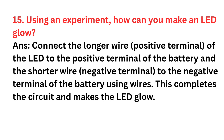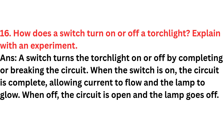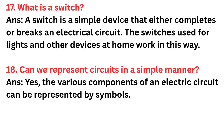Question fifteen: Using an experiment, how can you make an LED glow? Answer: Connect the longer wire (positive terminal) of the LED to the positive terminal of the battery and the shorter wire to the negative terminal using wires. This completes the circuit and makes the LED glow. Question sixteen: How does a switch turn a torch light on or off? Answer: A switch turns the torch on or off by completing or breaking the circuit. When the switch is on, the circuit is complete and current flows; when off, the circuit is open and the lamp goes off. Question seventeen: What is a switch? Answer: A switch is a simple device that either completes or breaks an electrical circuit.